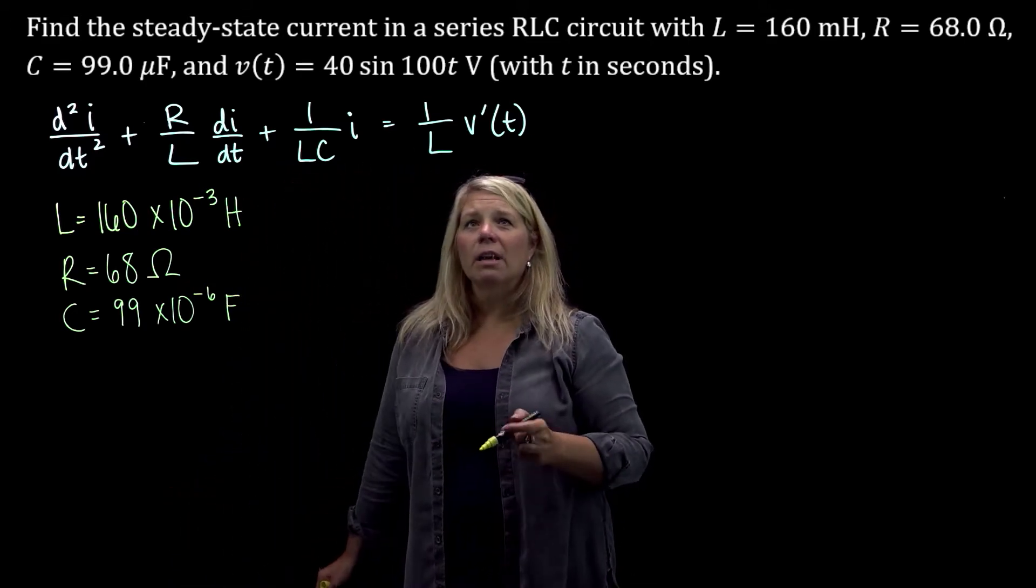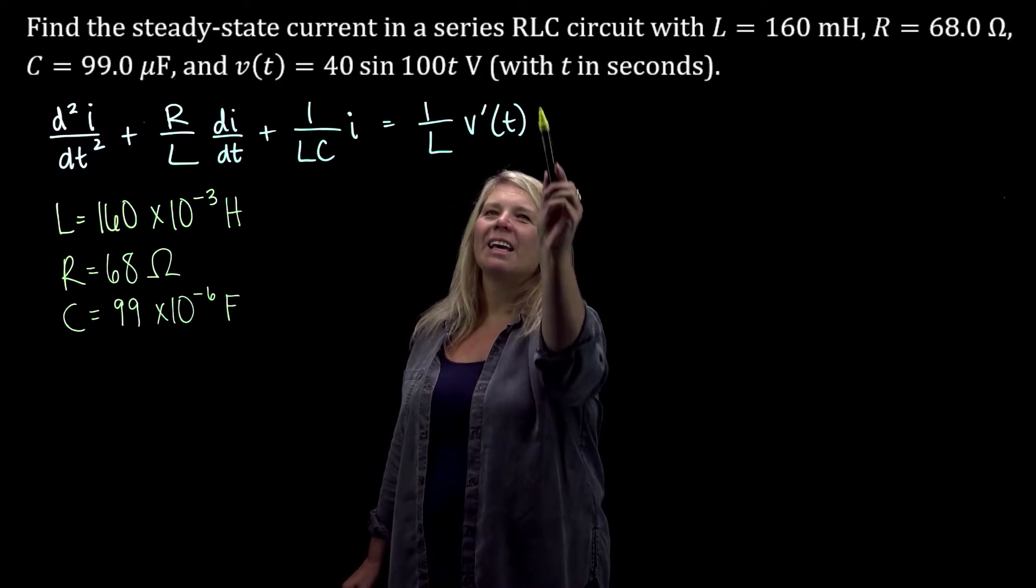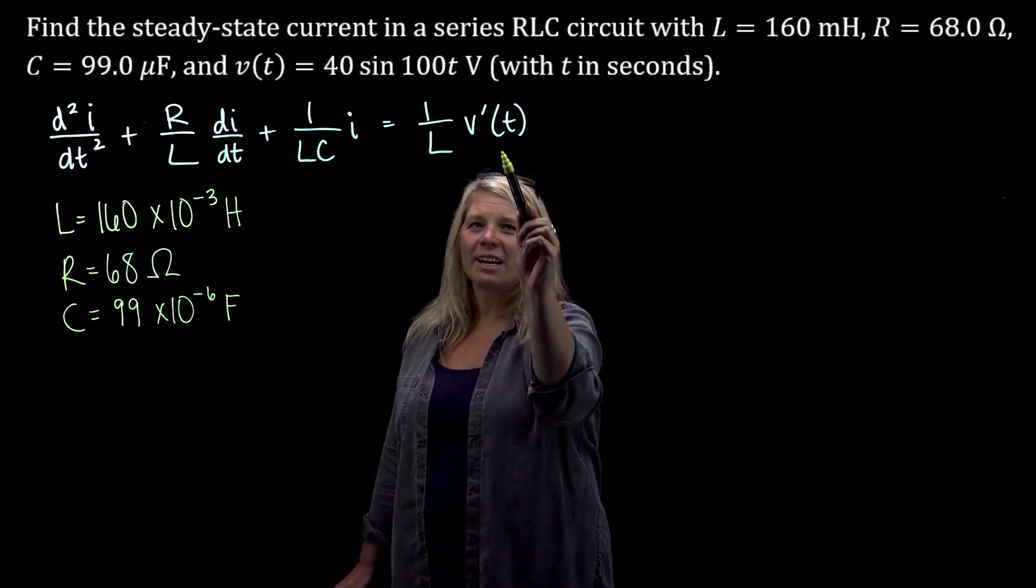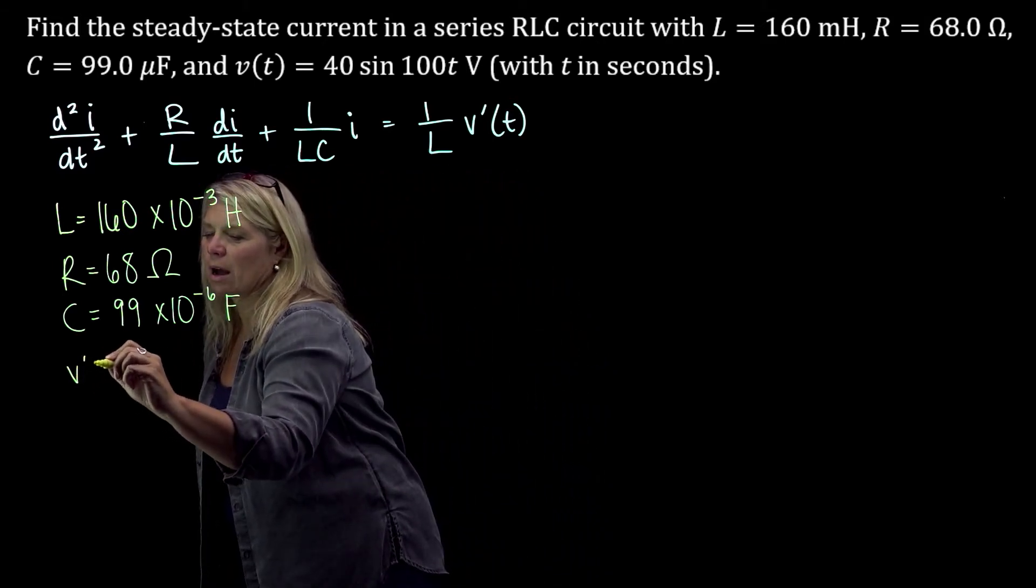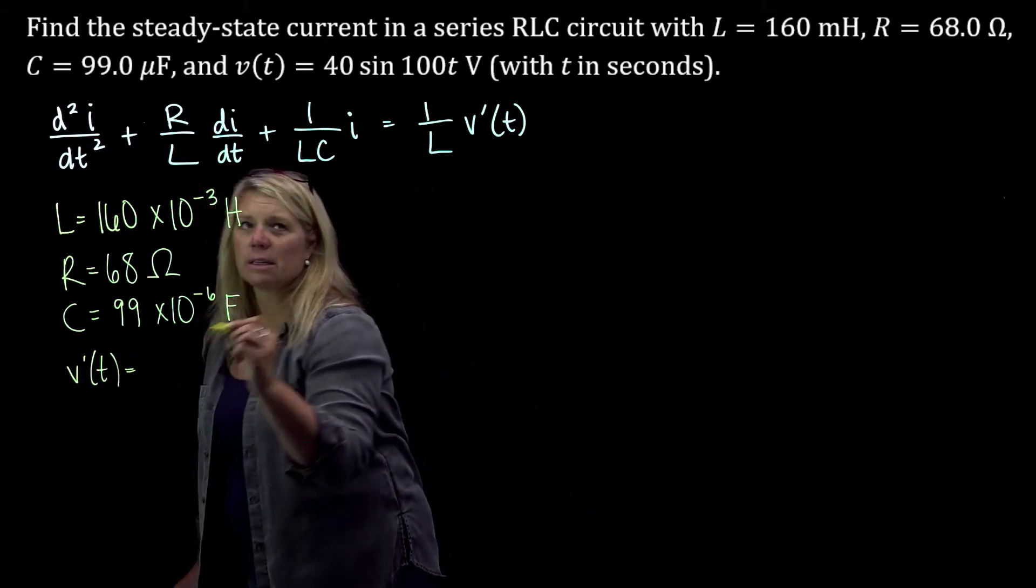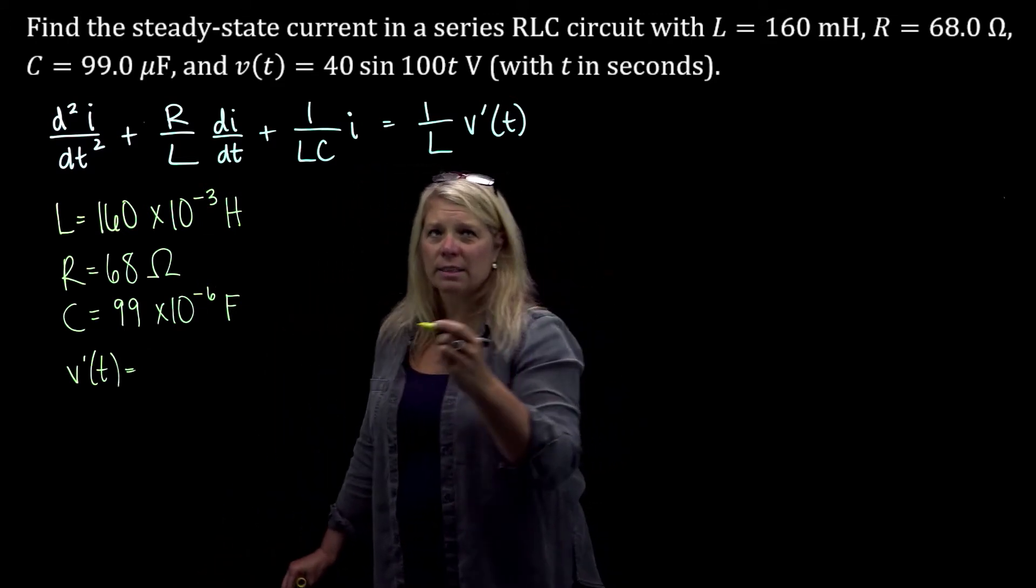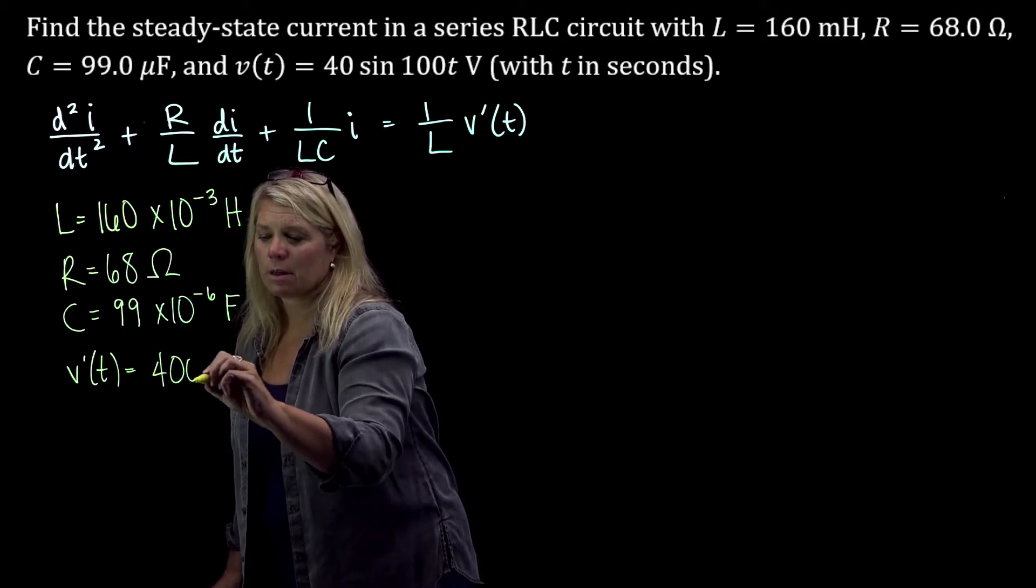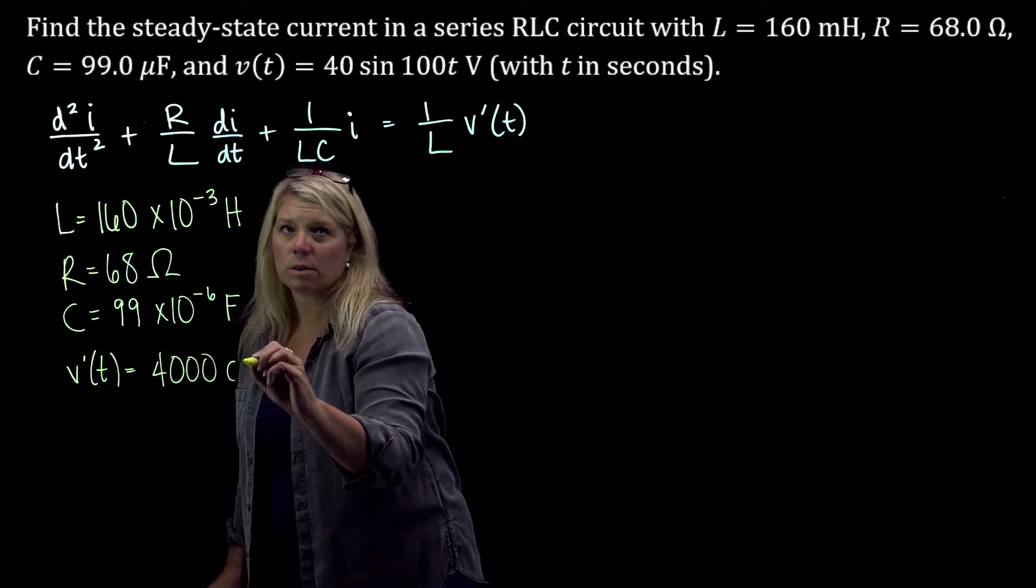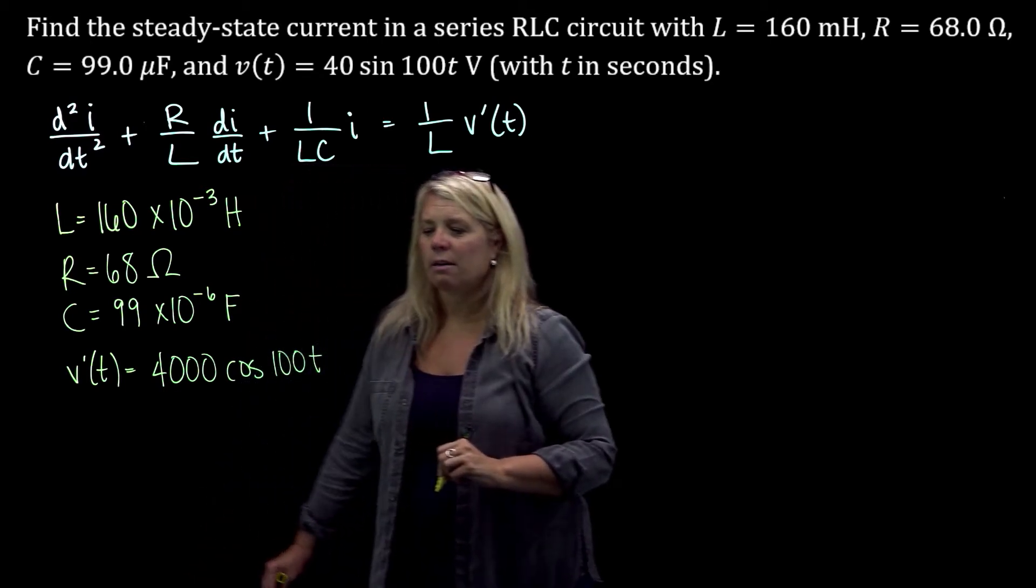And then we're given a voltage function. But in our equation here, notice that we've got V prime. So we're going to need to use V prime of T. So we're just going to take the derivative of our voltage function. So let's see, we get 4,000 cosine of 100T is our V prime of T.